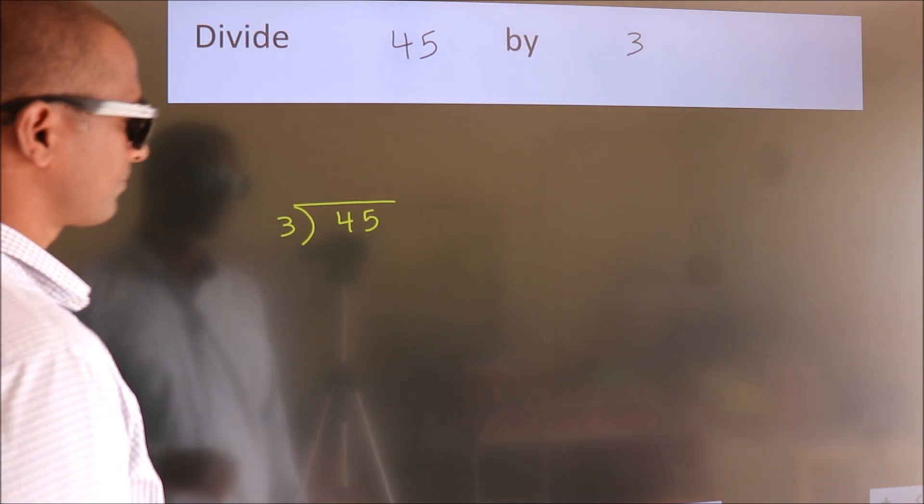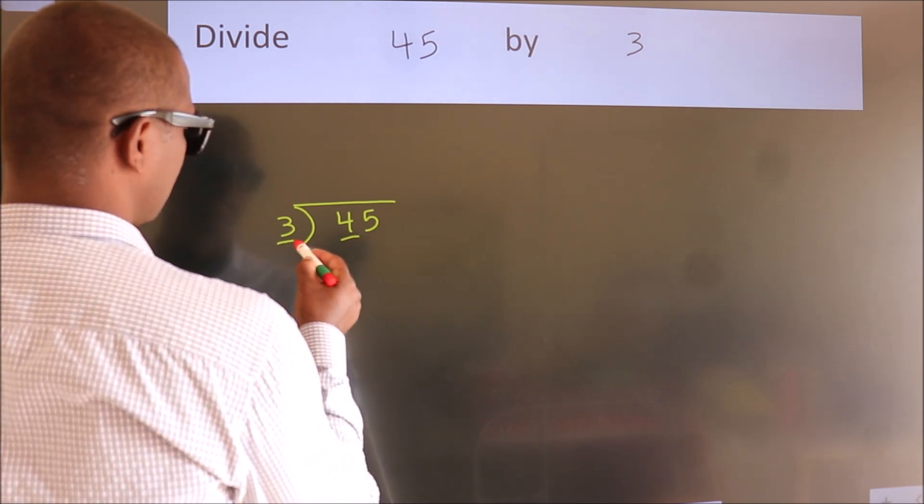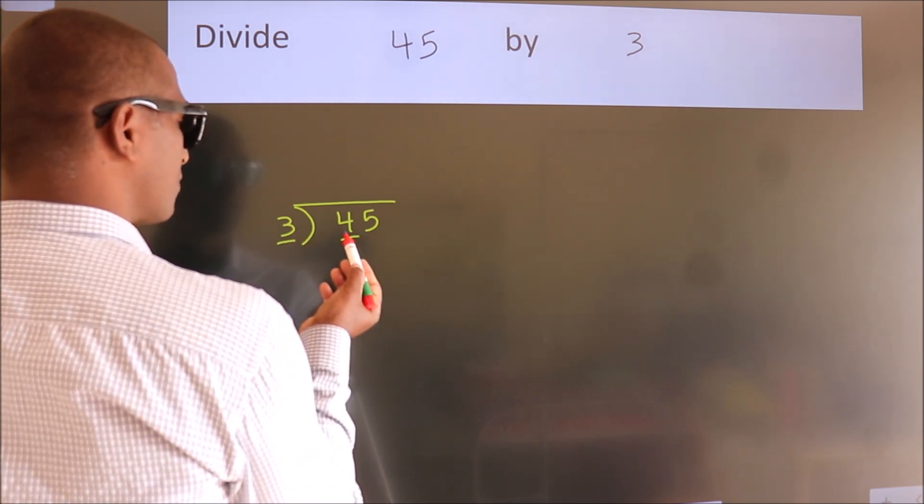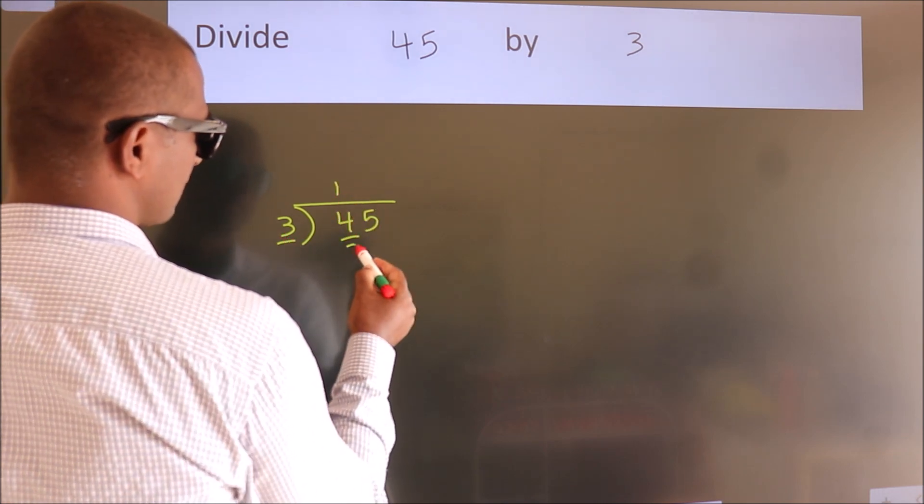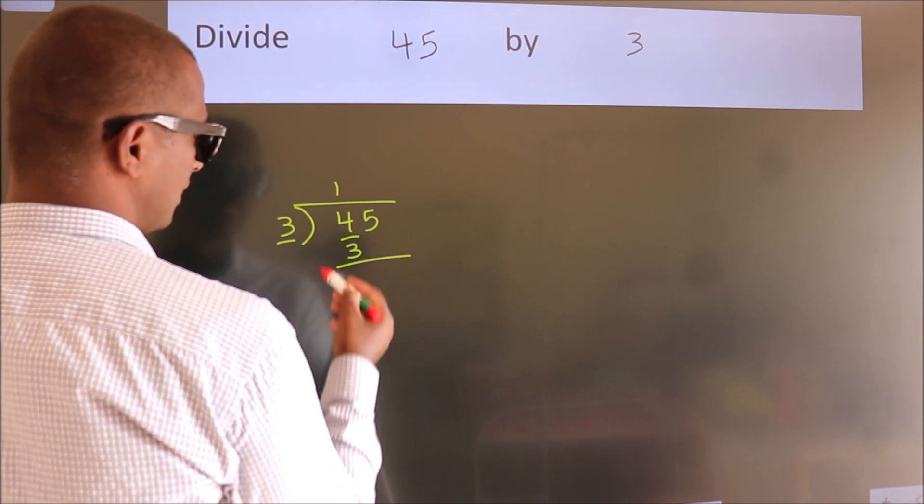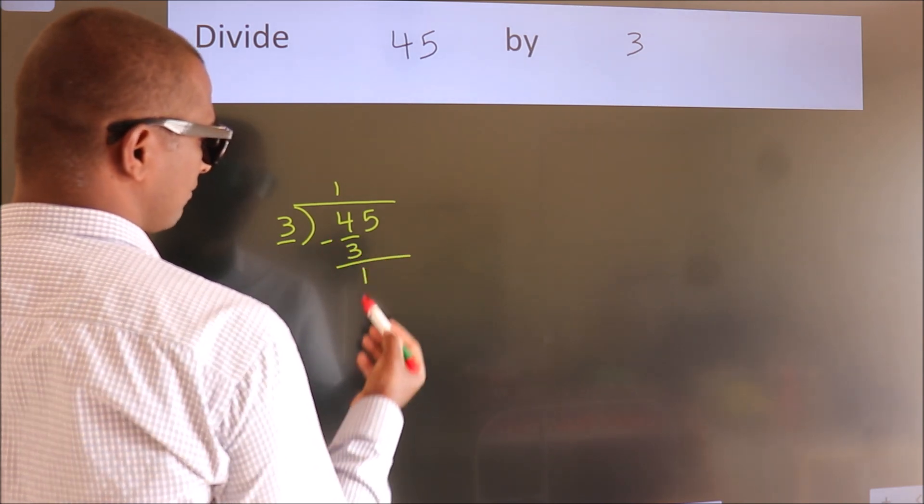Next, here we have 4, here 3. A number close to 4 in the 3 table is 3 once 3. Now we should subtract. We get 1.